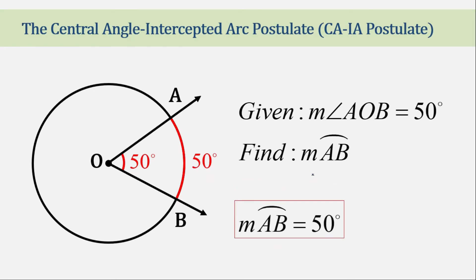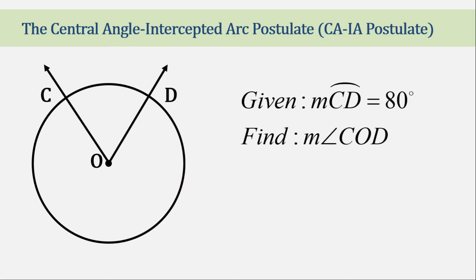Now what if the given is the intercepted arc? If the intercepted arc CD measures 80 degrees, then what is the measure of its central angle? What's the measure of angle COD? It is the same — the measure of angle COD is also 80 degrees.